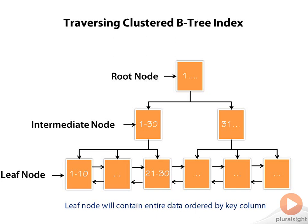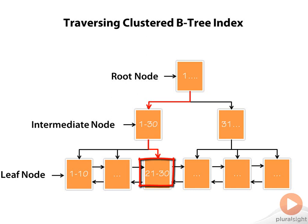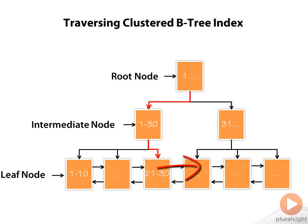Let's understand one more time how traversing a cluster B-tree index happens. Assuming we are still looking for row number 22, from the root node, MySQL engine will go to the intermediate node, and from the intermediate node it will go to the leaf node containing row number 22. However, if our query says retrieve rows from 22 to 32, it will read the entire current node and instead of going back to the root node, it will use the link between two leaf nodes and directly continue reading the next rows from the next page. MySQL engine always locates the first record in the leaf node, and after that uses either a forward or backward pointer to continue reading the entire range, saving lots of disk IO and extra lookups in the B-tree index.